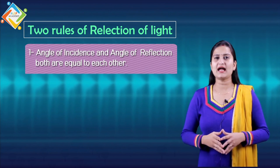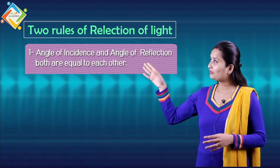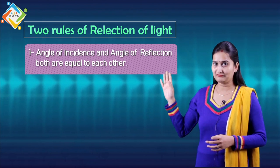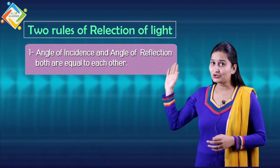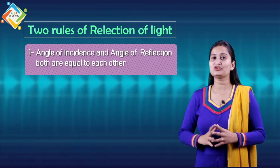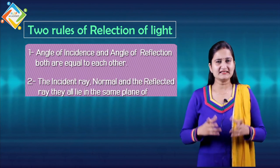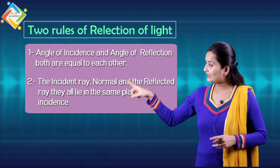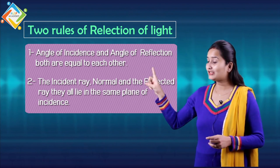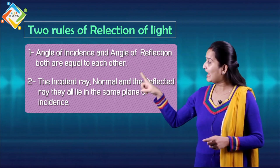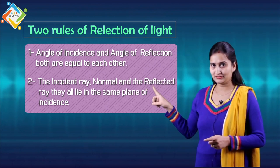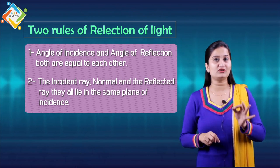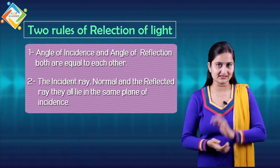The first rule we have learned is that the angle of incidence and the angle of reflection are both equal to each other. The second rule is that the incident ray, the normal, and the reflected ray all lie in the same plane of incidence.